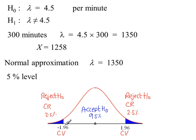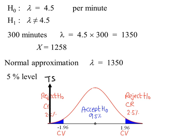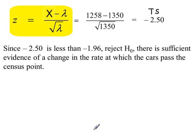Now we need to work out the test statistic, which is given by this formula. Our test statistic is minus 2.5. Minus 2.5 is less than minus 1.96. So we will reject H0. There is sufficient evidence of a change in the rate at which the cars pass the census point. So a conclusion in context.